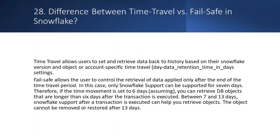Question: What is the difference between Time Travel and Fail-safe in Snowflake? Answer: Time Travel allows users to retrieve data back in history based on their Snowflake version and object or account-specific time travel data retention settings. Fail-safe allows retrieval of data only after the end of the Time Travel period, and only Snowflake support can access it for 7 days. Therefore, if the Time Travel period is set to 6 days, you can retrieve DB objects between 7 and 13 days after a transaction is executed with Snowflake support. Objects cannot be removed or restored after 13 days.